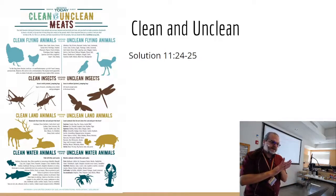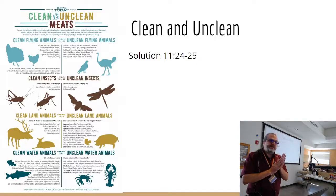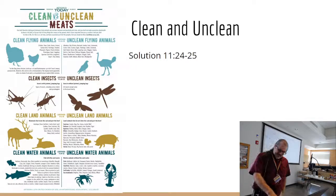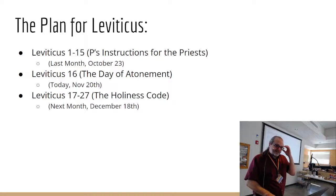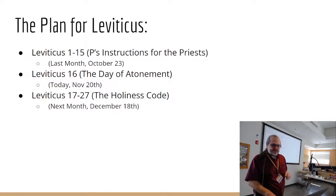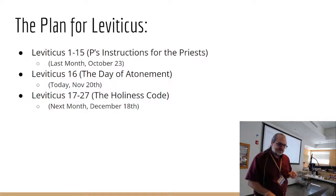The second half covers clean and unclean animals, menstrual flows, and other things that render someone unclean, with solutions usually involving washing clothes and being unclean until evening. It also covers cleansing the leper in chapter 14, which we'll revisit today because it relates to the Day of Atonement. So our plan: we covered Leviticus 1–15 last month; today is the Day of Atonement with a look back at Leviticus 14; next month, Leviticus 17–27, the Holiness Code; then Numbers.